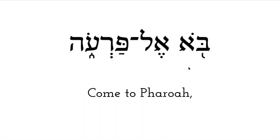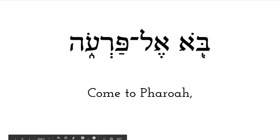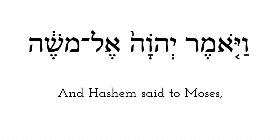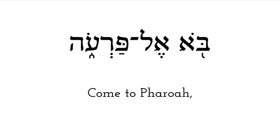Next part of the verse: this is a bet, and this is an aleph with a cholem, so it says 'oh' — so bo. Bo literally means come. Often this verse is translated as 'go to Pharaoh,' but it literally means come. So Hashem was there with Pharaoh, working in the midst of Egypt, working on behalf of Israel, working on Pharaoh's heart even. Then we have el again — bo-el means 'to.'